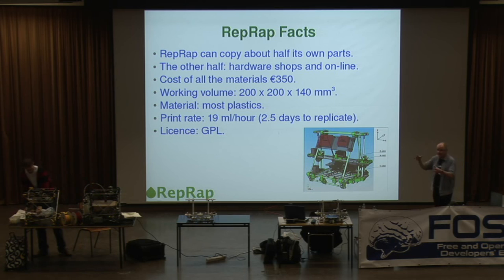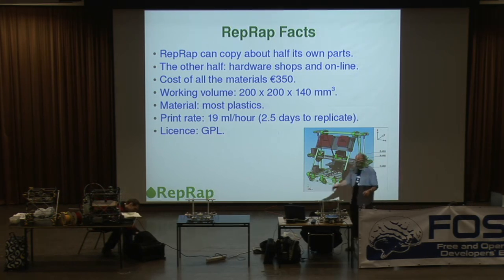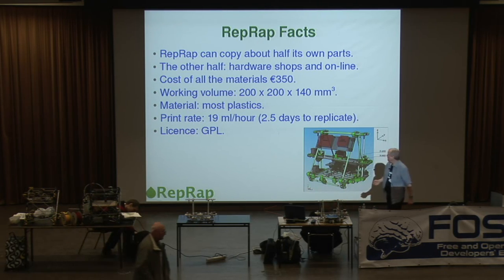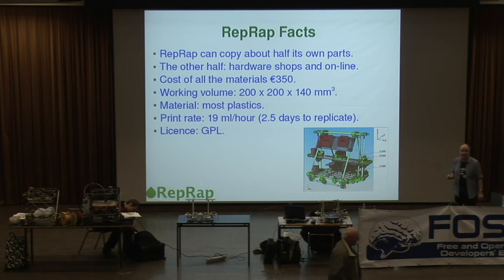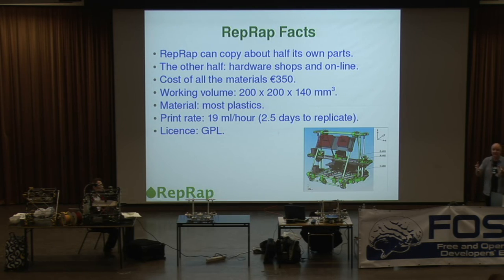The working volume — the biggest object it could produce — is 200 by 200 by 140 millimeters. That's effectively the region above the blue area here, up to the height that the machine can build. It would take quite a while to make an object that big. One of the things about this technology is that the time it takes to make something is proportional to the volume of the object, and the volume of an object goes up as the cube of its linear dimensions. So if you double the size of something, it takes eight times longer to print — one of the disadvantages of this technology.